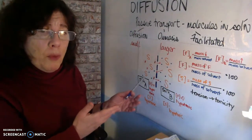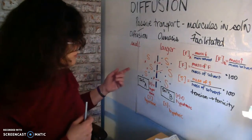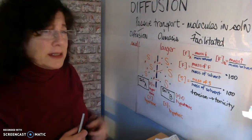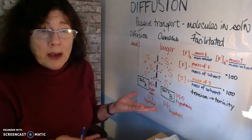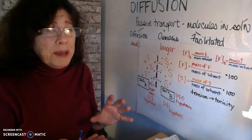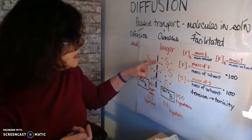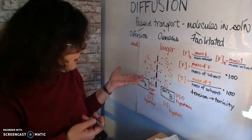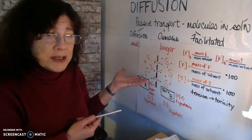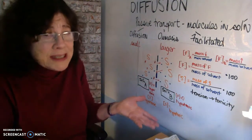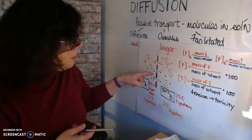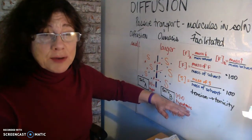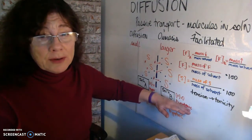Now let's talk about what's going to happen with sugar. We have three sugar molecules in solution A and three sugar molecules in solution B — they are equally concentrated. But they cannot move, because they are too big to get through the semi-permeable membrane. So we have an isotonic solution that can't move across the membrane due to concentration differences — there are none — and because the semi-permeable membrane pores are too small for sugar.